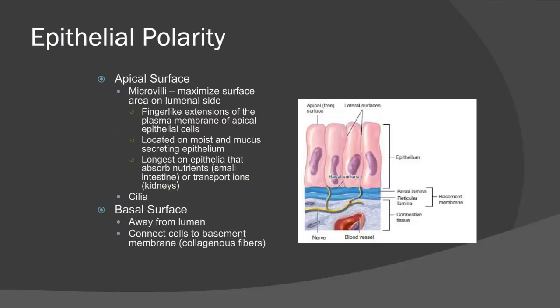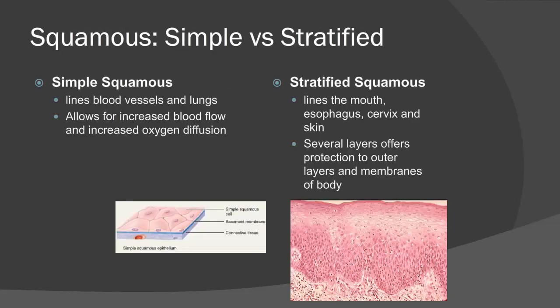Epithelial polarity describes the different sides of epithelial cells — the apical side and the basal side. The basal side attaches epithelial cells to the basement membrane via desmosomes. On the apical surface — the free side exposed to the lumen — you typically see extensions such as villi and microvilli, which help maximize surface area on the luminal side. The apical side also features moist, mucus-secreting epithelium that helps protect the epithelial cell layer.